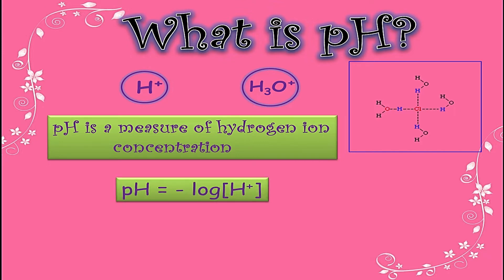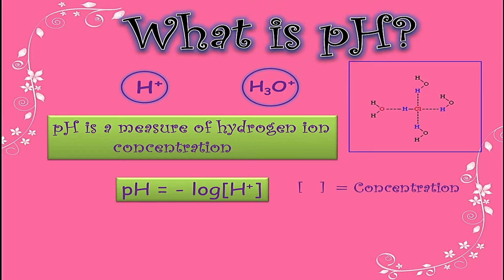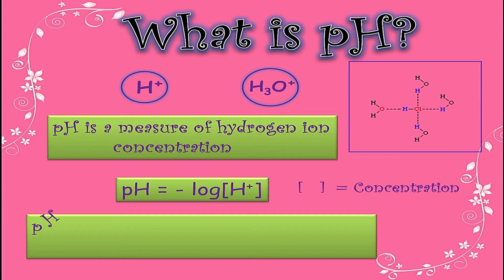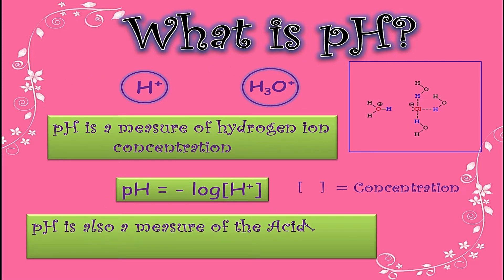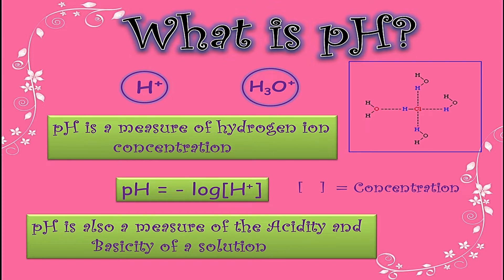pH can be calculated using the formula: pH = -log[H⁺]. These square brackets represent concentration. pH also measures the acidity and basicity of any solution. If you know the pH of any substance, you can tell either the substance is acidic or basic.